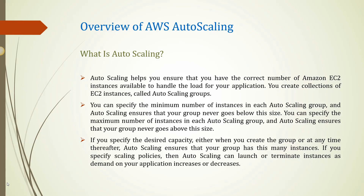What is Autoscaling? Autoscaling helps you ensure that you have the correct number of Amazon EC2 instances available to handle the load of your application. You create a collection of EC2 instances called Autoscaling Groups. You can specify the minimum number of instances in each Autoscaling group, and Autoscaling ensures that your group never goes below this size.